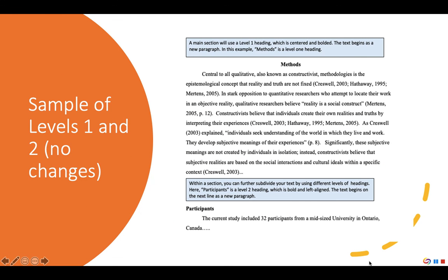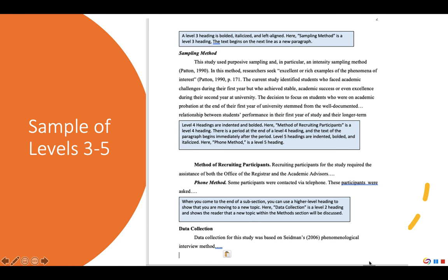Let's look at examples. The subheading 'Methods' is a level 1 heading — it's bolded and centered, with text beginning on the following indented line. 'Participants' is a level 2 heading — left aligned and bolded, with text beginning on the following indented line. A level 3 heading is left aligned, bolded, and italicized, with all keywords capitalized and text beginning on a new indented line.